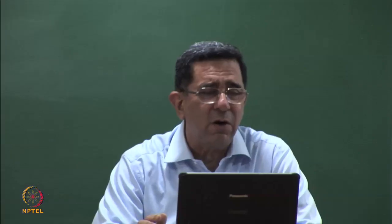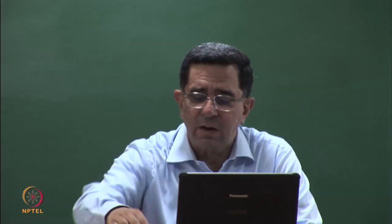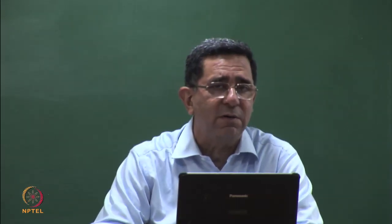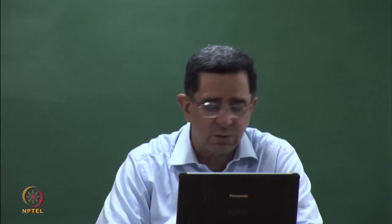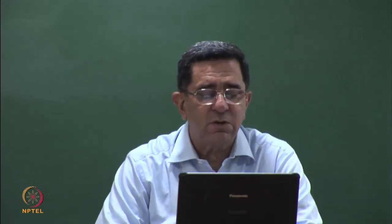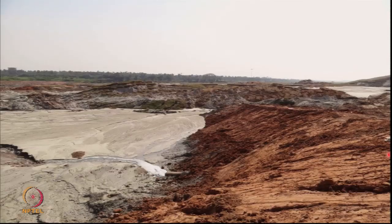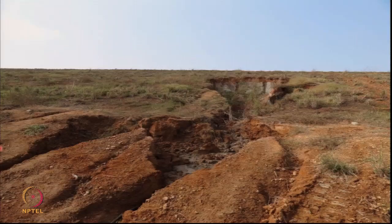Normally such failures are not reported in the downstream method of construction, but there are very few cases of downstream method of construction in the country. Most of the failures we are going to discuss are by the upstream method. This is an ash pond where the ash has breached and come out, and this is another tailings impoundment with a slope failure.